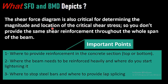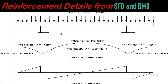Without shear force diagram and bending moment diagram, you would not be able to determine these critical sections of the beam. Now, regarding reinforcement details from SFD and BMD — how SFD and BMD tells us where to provide lap splicing, where to provide positive steel, and where to provide negative steel. Let's suppose we have an overhanging beam. This is the best example because in an overhanging beam we have both negative moment, positive moment, negative shear, and positive shear — making it the best example to explain the reinforcement details.